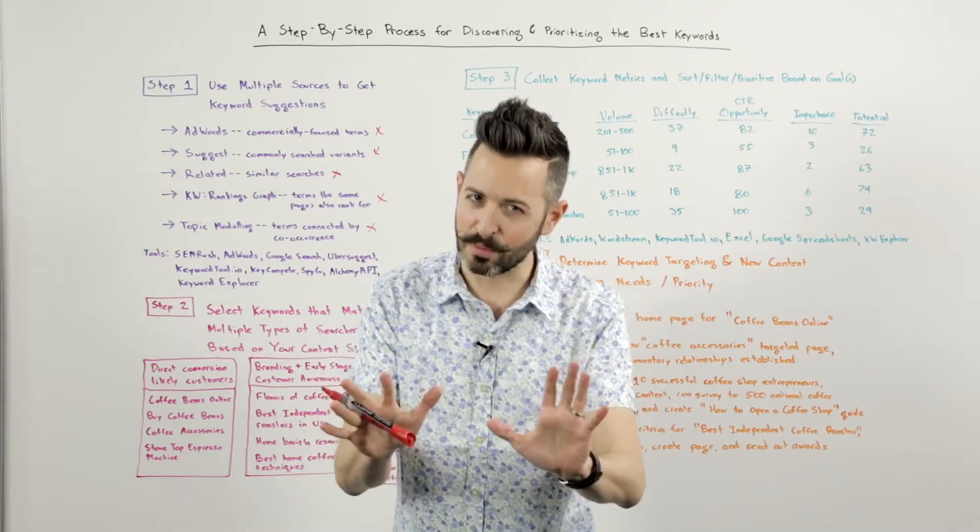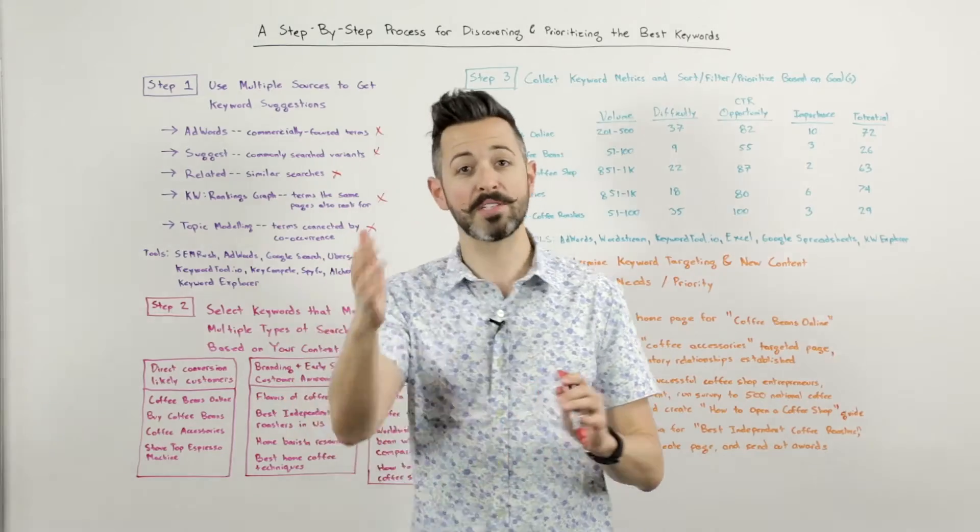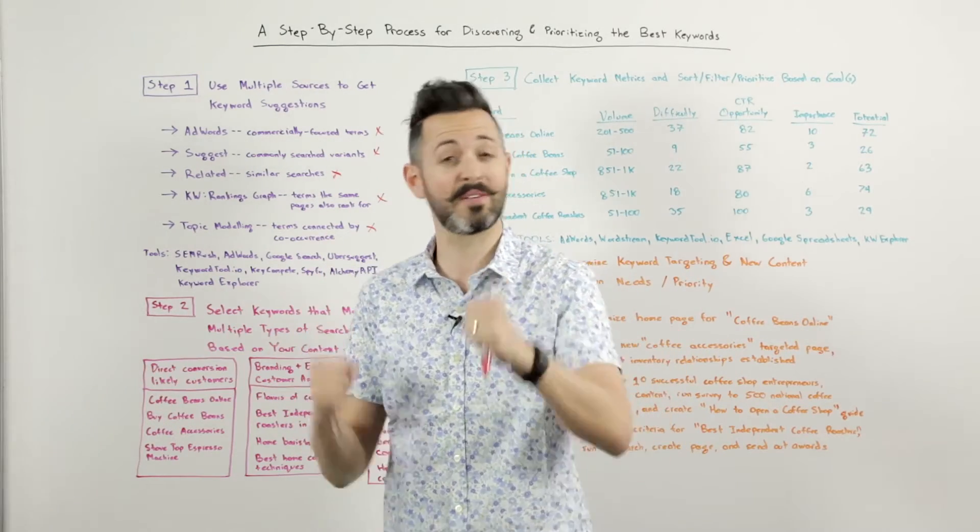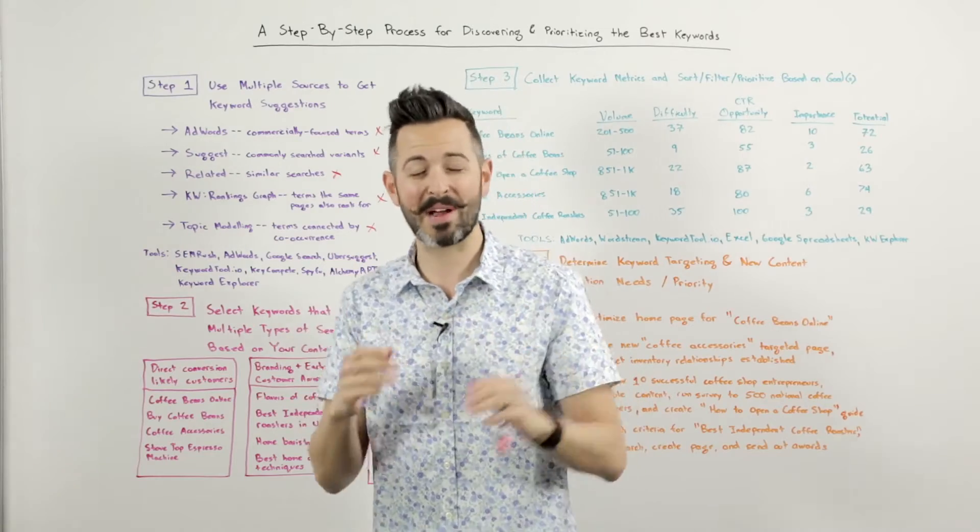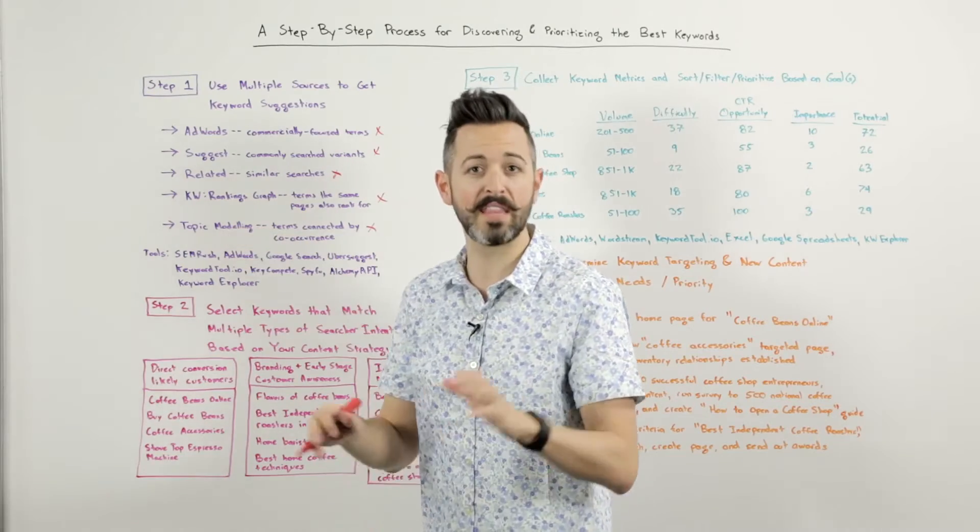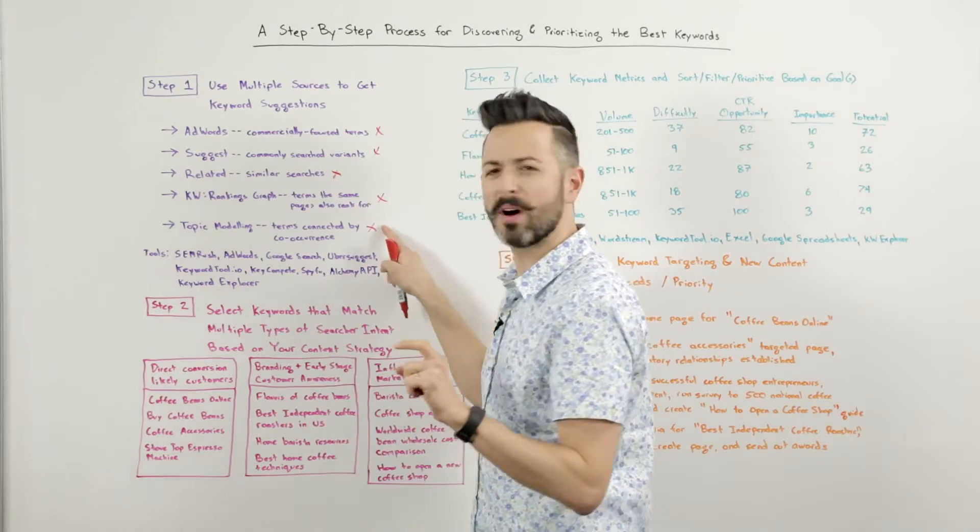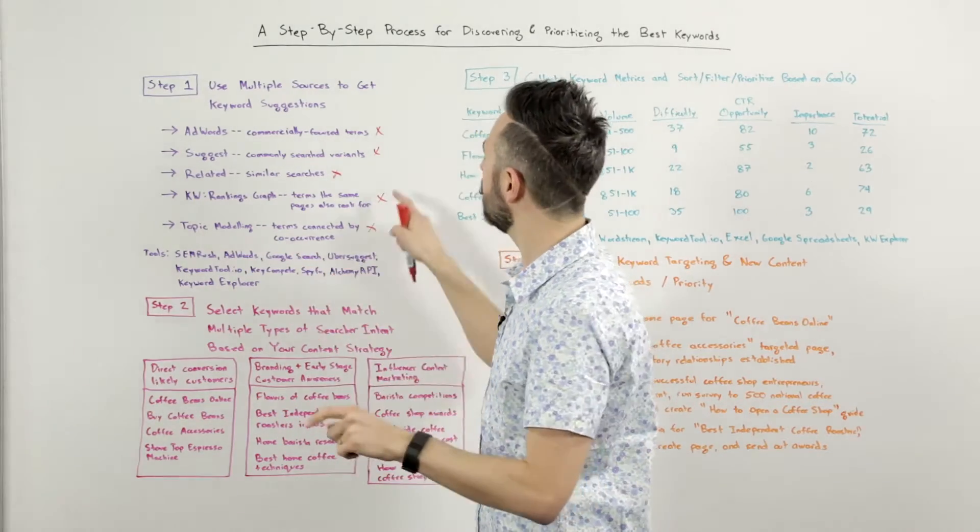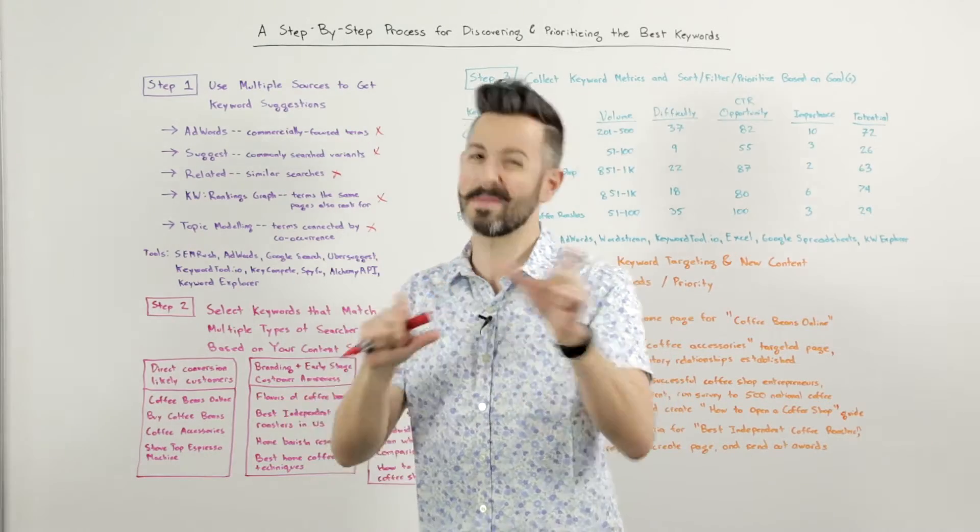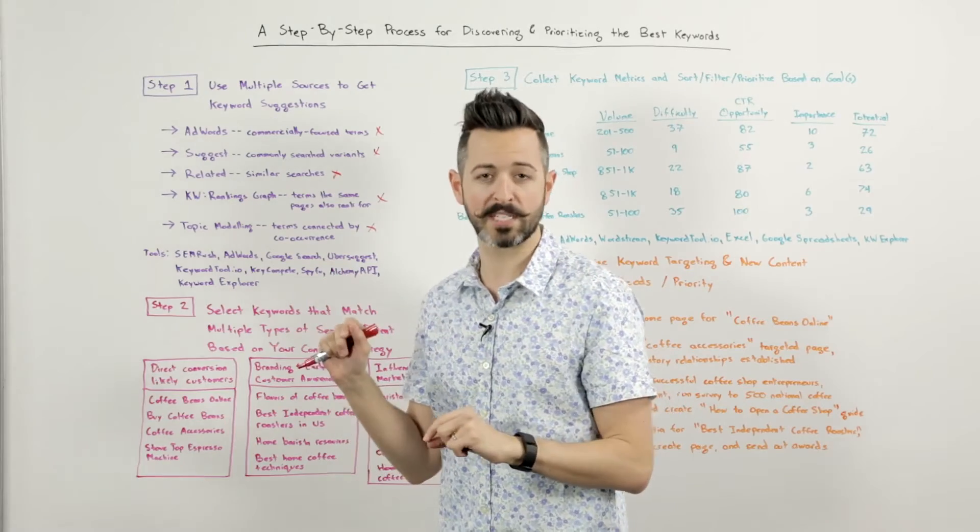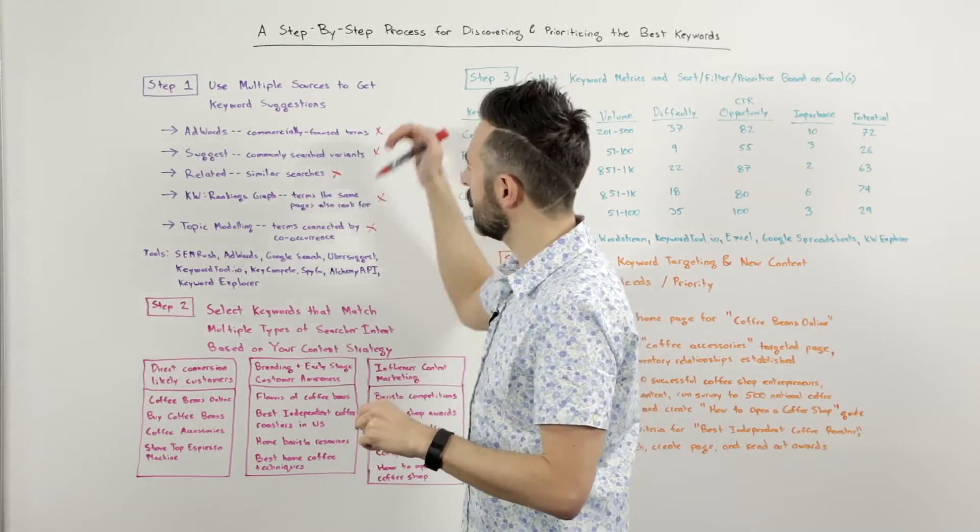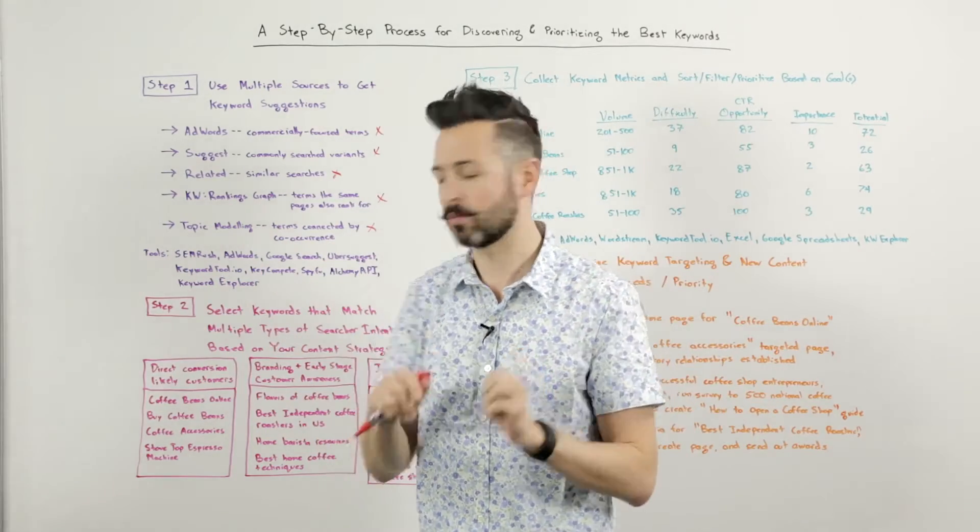And then, somewhat self-promotionally, and I apologize for that, but Keyword Explorer, which Moz just launched this week and which we're pretty excited about. I was actually the product architect for that, so I'm feeling quite excited and very proud of my team. Keyword Explorer, shamelessly, has all of these in there. I think our topic modeling is actually a little better than Alchemy APIs. I think our keyword to rankings graph is almost as good, maybe in some cases better, maybe in some cases not as good, as what SEMrush has. And we also get suggestion related, real time, and then we obviously have a big corpus that we've gathered from AdWords, too.